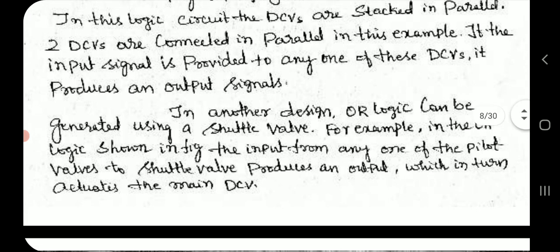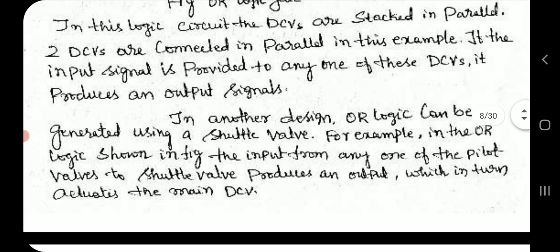In this logic circuit, the direction control valves are stacked in parallel. Two direction control valves are connected in parallel. In this example, if the input signal is provided to any of these direction control valves, it produces an output signal.